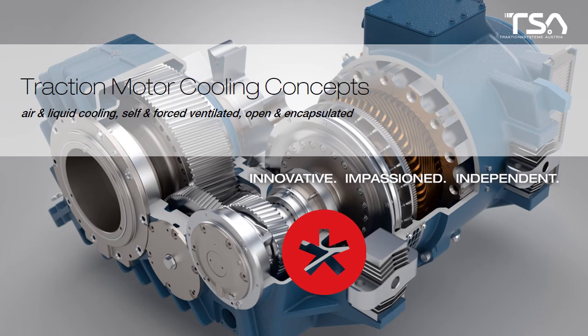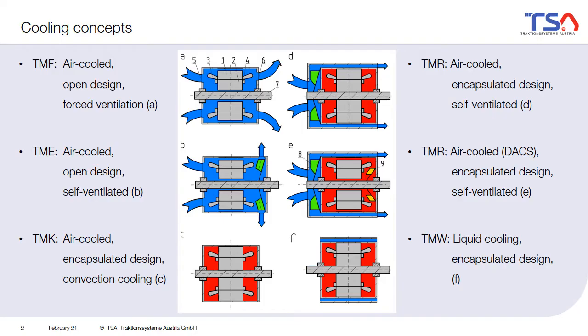Chapter 6: Different cooling concepts for traction motors. In this chapter we will hear about air and liquid cooling, about self-enforced ventilated motors and about open and encapsulated motors. For a traction motor in the railway sector, different cooling concepts can be used. It's up to the system designer which cooling concept he chooses for the motor and which he thinks is best for this application.